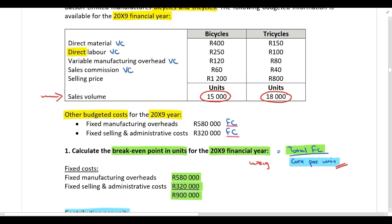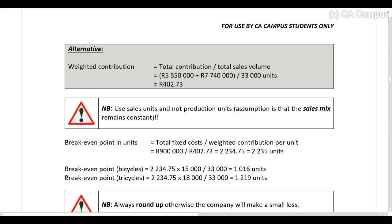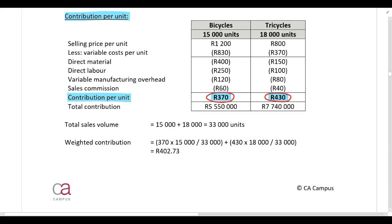We are going to use that sales mix to calculate a weighted contribution per unit. Please note: if you are provided with both sales volumes and production volumes, you should use sales volumes — not production volumes — in this calculation. The assumption is that the sales mix remains constant, so you always use sales volumes and not production volumes.